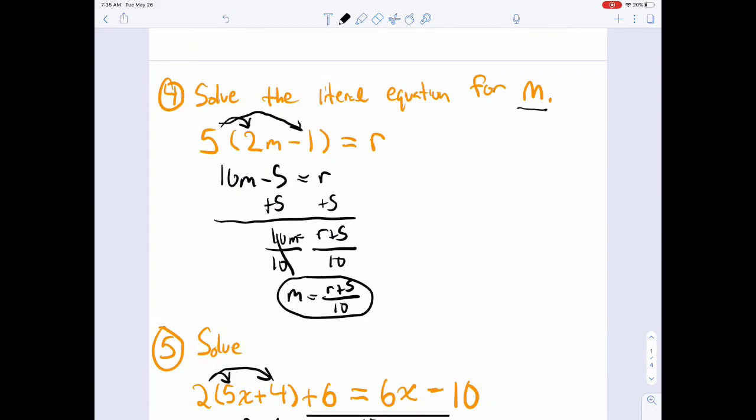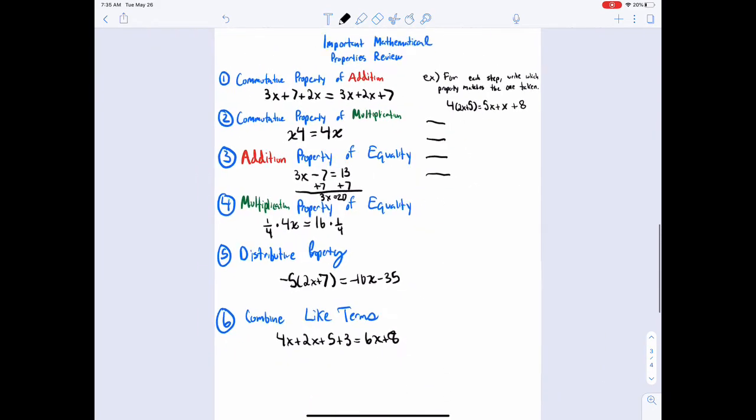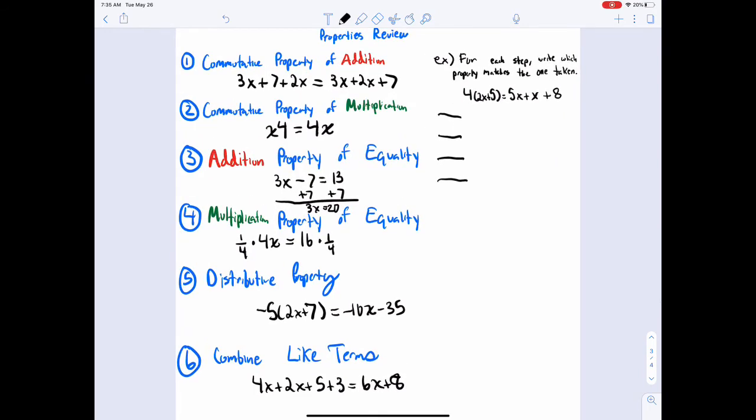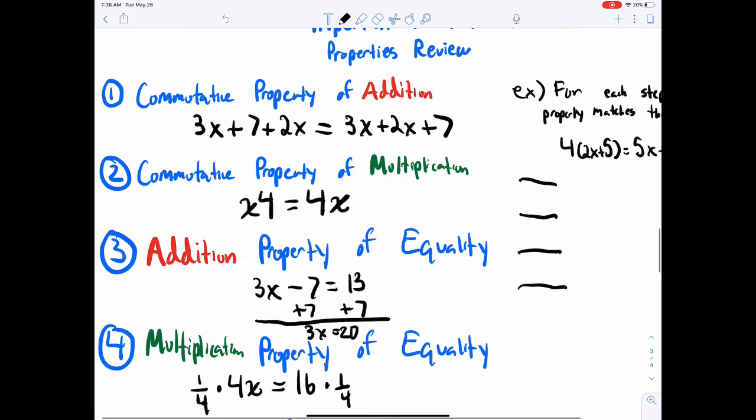All right, so there we go. We just reviewed solving equations like in 5, and solving literal equations like in 4. And the last thing we're going to review today is important mathematical properties. So I listed 6 here. There are a couple more, but these are the main 6 I think you should know.